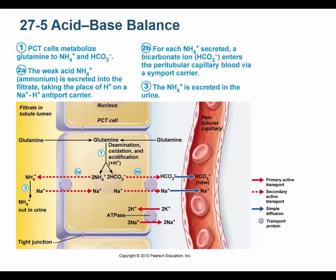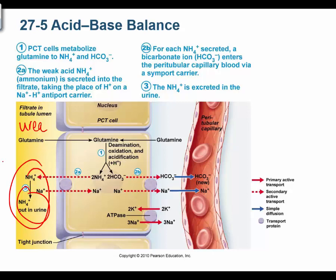Back to the proximal convoluted tubule: NH3 (ammonia) can accept a proton and become ammonium, which you can urinate out. We don't let ammonia float around our body — our liver converts it to urea — but our renal tubular cells can make ammonia, put it in our urine, buffer it into ammonium, and urinate that out. Not only do we have urea in our urine, but also ammonium, which is why urine smells like ammonia.